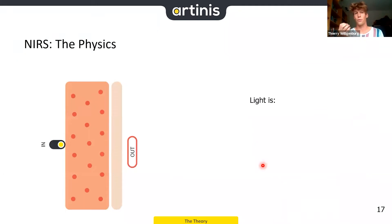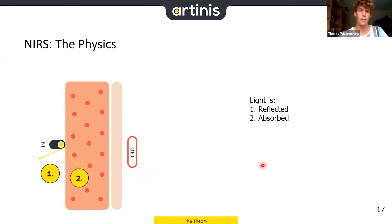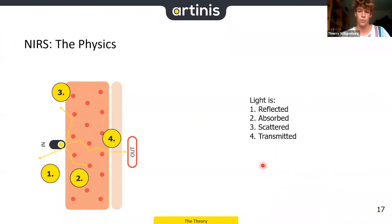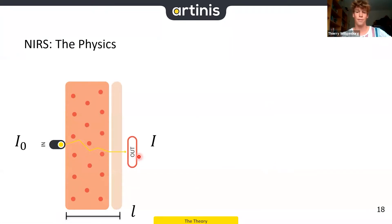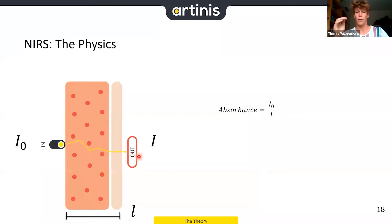When we transmit light onto tissue, it's not only absorbed — a part is reflected, a part absorbed, a part scattered, and a part transmitted through the tissue. In NIRS, we can quantify the incoming light from the transmitter and the outgoing light received on the receiving end. This gives us absorbance, which equals the incoming light divided by the outgoing light, and transmission equals the outgoing light divided by the incoming light.